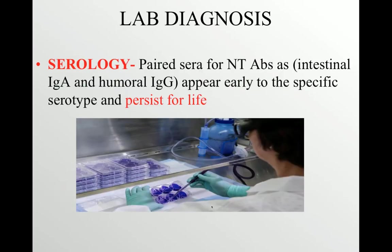For serological tests, paired sera are taken — one in the acute phase and the second in the convalescent phase — and there should be a four-fold rise in the titer. Because both intestinal IgA and humoral IgG appear early in the infection and persist for life, it is very important to document a four-fold rise in titers.